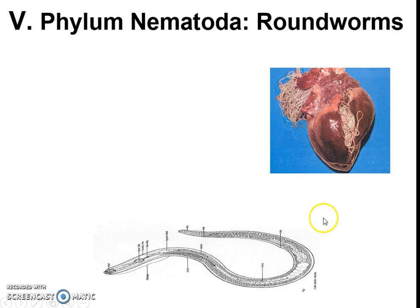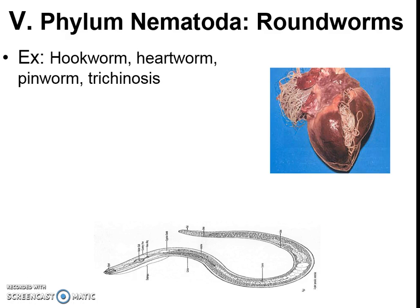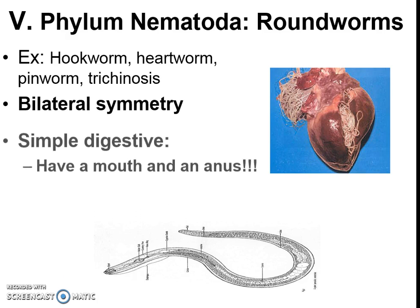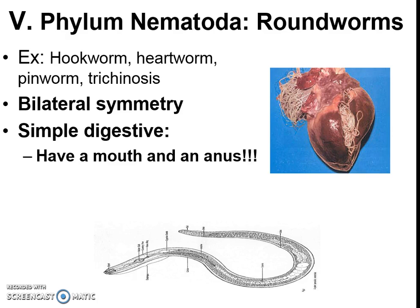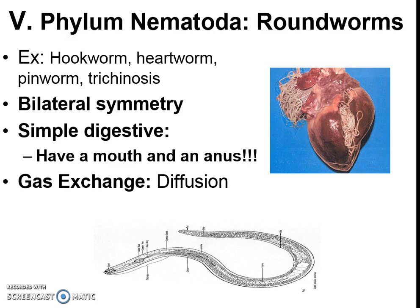Now we're at the nematodes — more worms, still very simple. These are parasitic worms you do not want, like heartworm and hookworm. They are bilaterally symmetrical and have simple digestive systems, but for the first time we have a separate mouth and anus. That's a pretty big deal — these are the first organisms to have two separate openings, making it one long tube that is much better digestively. Gas exchange is still through diffusion.